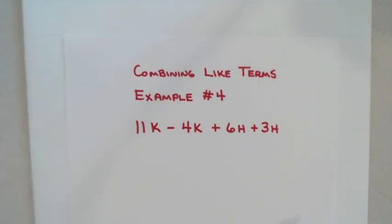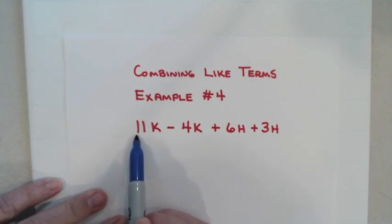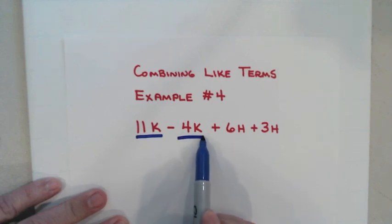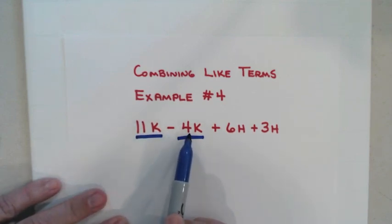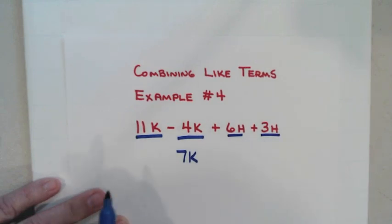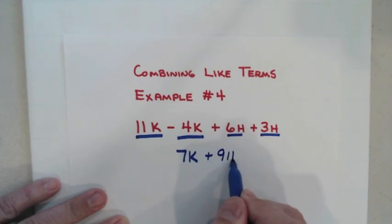Example number four. I have a total of four terms. Everything with a k goes together. It's got 11 k's right here and negative 4k right here. It's like I have 11 k's and I'm taking 4 k's away from it. 11 minus 4 is 7 k's. Same with my h's down here. I have 6 h's right here, 3 h's right there. Put them together for a total of 9 h's.